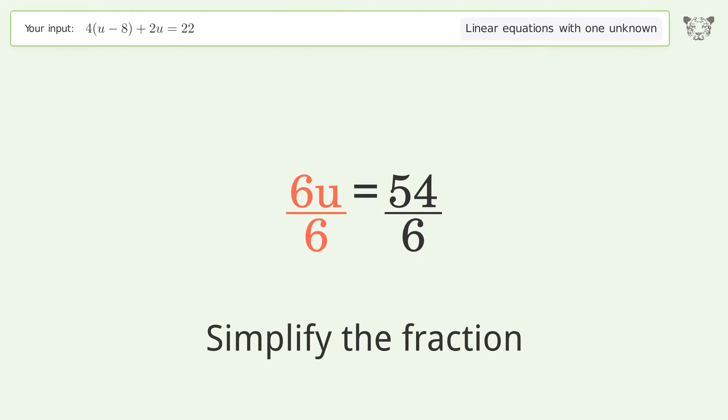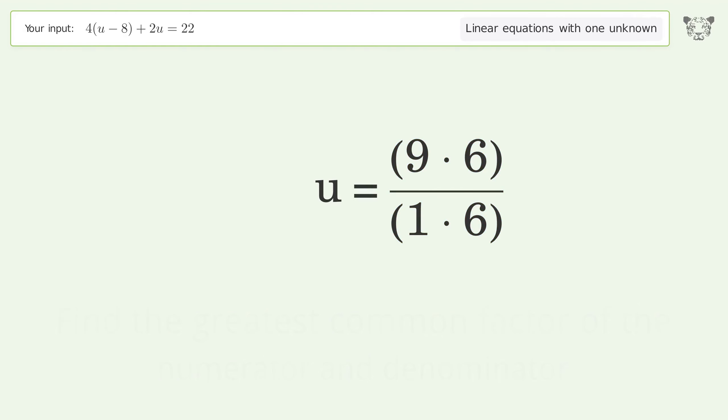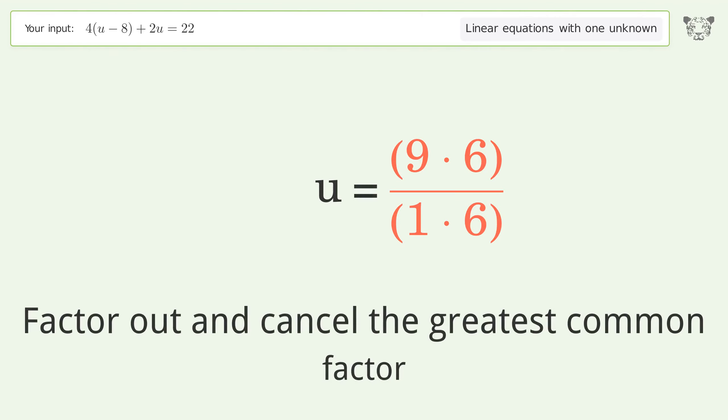Simplify the fraction. Find the greatest common factor of the numerator and denominator. Factor out and cancel the greatest common factor.